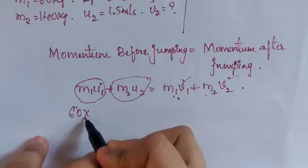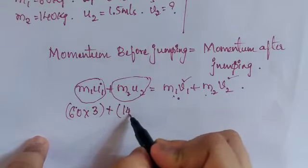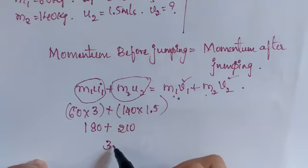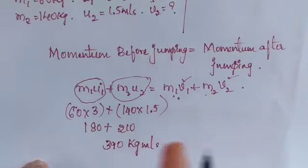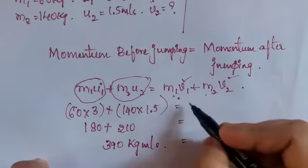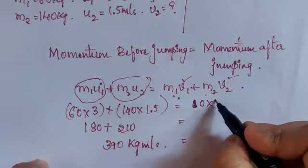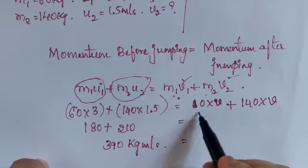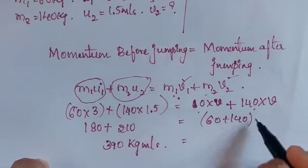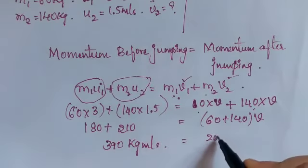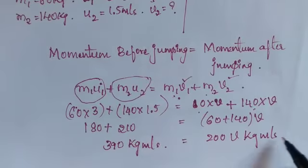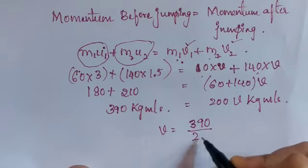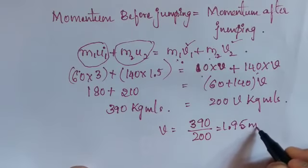Before jumping: M1·U1 is 60 into 3 equals 180, plus M2·U2 is 140 into 1.5 equals 210, giving total initial momentum of 390 kg·m/s. After jumping: (M1 + M2)·V equals (60 + 140)·V equals 200V. So V equals 390 divided by 200, giving 1.95 meter per second. This is the common velocity after jumping for both the boy and the trolley.